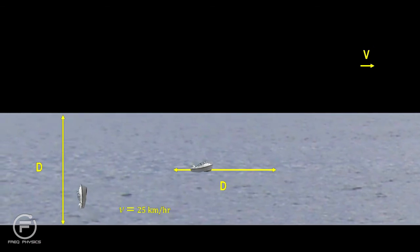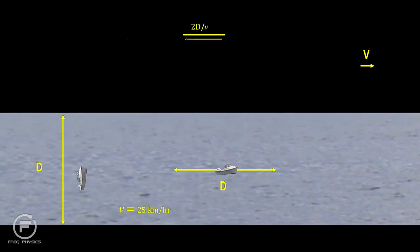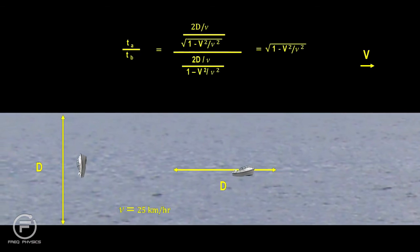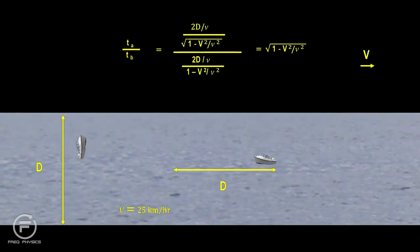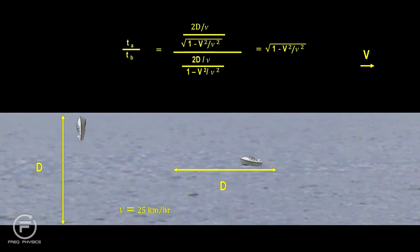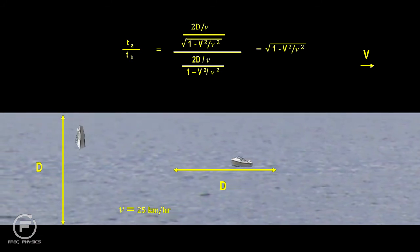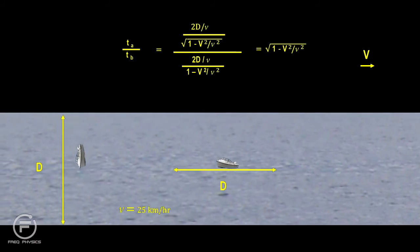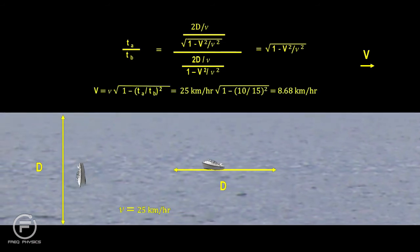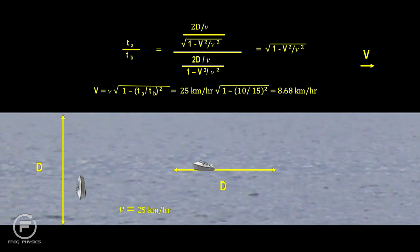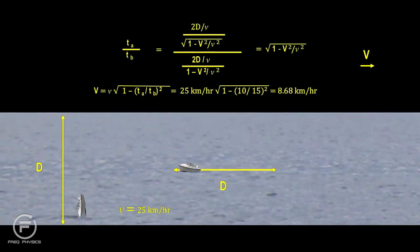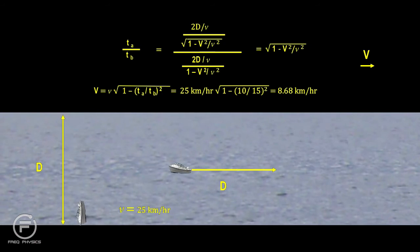Now back to our example. If we take a look at the ratio of the cross river time, t sub a, to the down river time, t sub b, we see that it creates an equation that can be solved for the velocity of the river. For example, if the boat speeds are 25 km per hour, and we carefully measure the time of the two round trips to be 10 minutes for the cross river round trip, and 15 minutes for the down river round trip, then we can find the river flow. In this example, it's 8.68 km per hour.